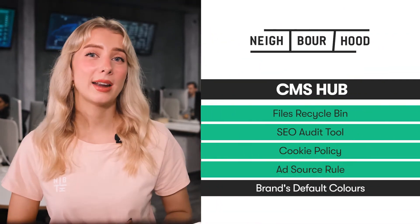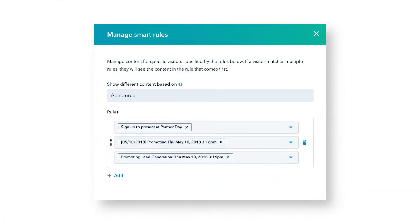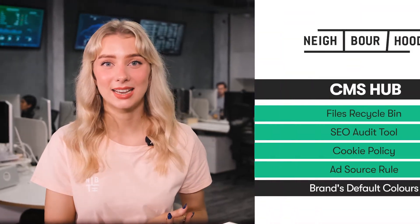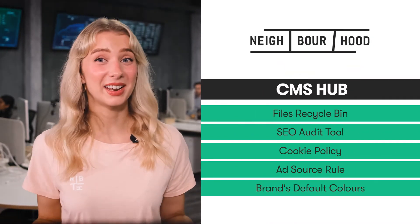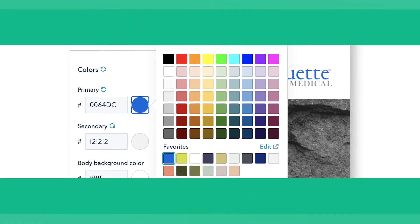The next update for the CMS is the new ad source rule for smart content on pages. Smart content, if you're not already aware, lets you dictate which audiences experience what content on your pages. In addition to device type, CRM data and location, you can now define smart content by ad source rule. With this update, you can create smart content rules based on the ads someone has clicked on to access a page. The final CMS update for this month sounds simple, but to anyone who works in and around the CMS day-to-day it is a massive time saver. You can now easily access your brand's default colors while editing content — the brand colors previously set in the brand settings will now appear in the color picker within the page editor.